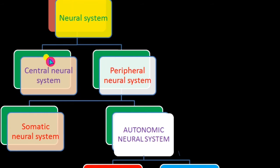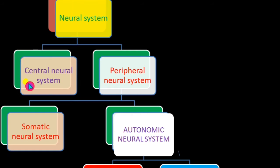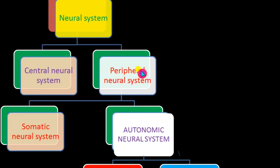Welcome to another class on the neural system. We all know that the neural system is divided into two parts: the central neural system and the peripheral neural system. The central neural system consists of the brain and the spinal cord. The peripheral neural system consists of the cranial nerves and the spinal nerves, and is again divided into two parts: the somatic neural system and the autonomic neural system.